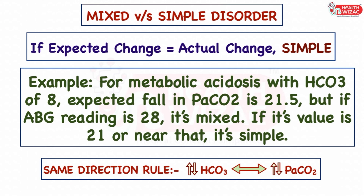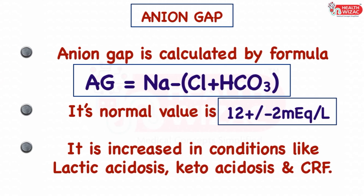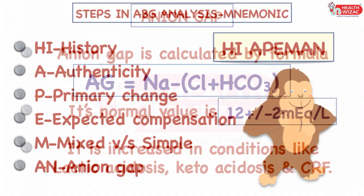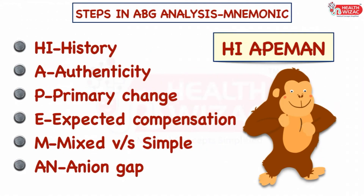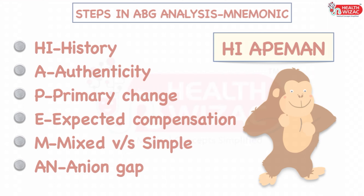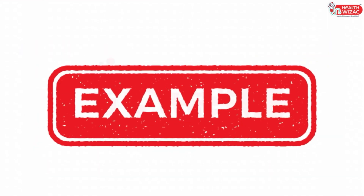Step 6 is to calculate the anion gap. Anion gap equals sodium minus the sum of chloride plus bicarbonate. Its normal value is 12 plus or minus 2 mEq/L. It is increased in conditions like lactic acidosis, ketoacidosis, and chronic renal failure. These were the 6 steps in analyzing an ABG sample. Now let's have a look at some examples to clarify this concept.